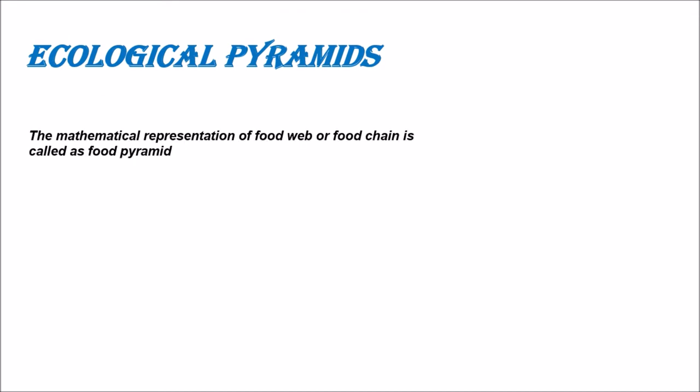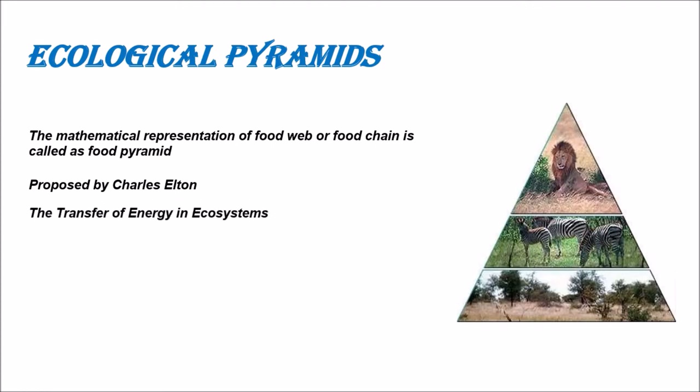Coming to the definition of ecological pyramids: the mathematical representation of a food web or food chain is called a food pyramid, or ecological pyramid. It is proposed by Charles Elton, who is responsible for giving the final look to ecological pyramids. In today's class you will see how the transfer of energy in an ecosystem takes place.